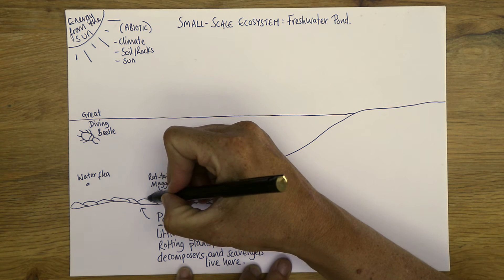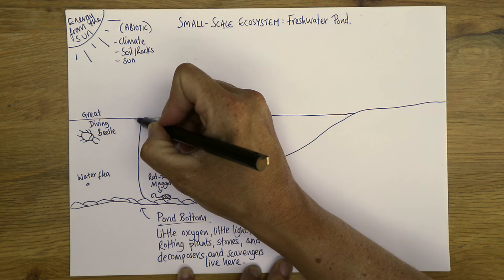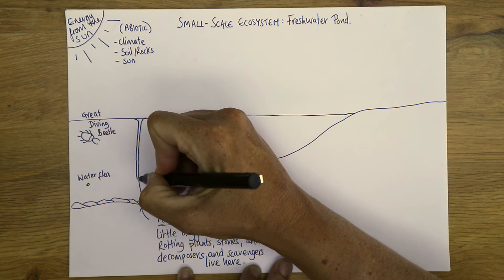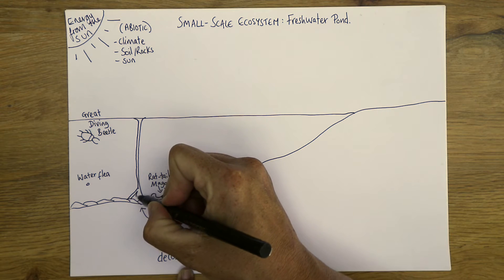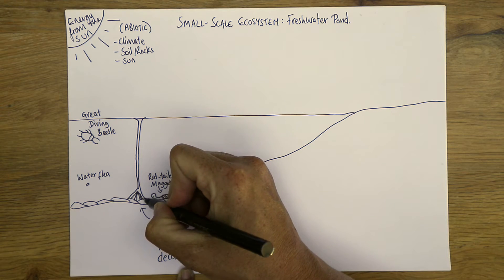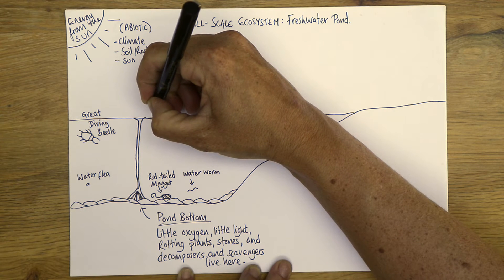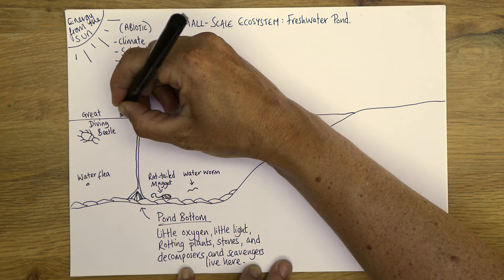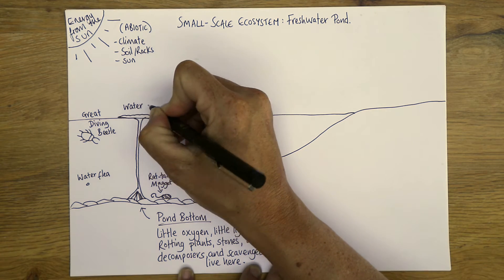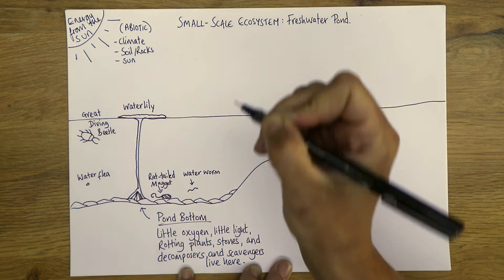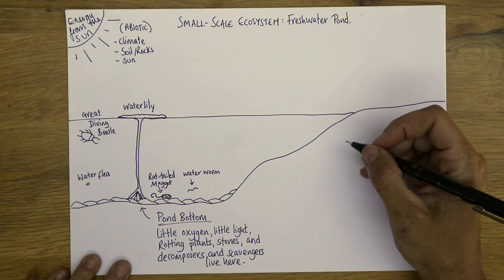The first plant we'll bring into play is a water lily — something really synonymous with ponds. It has a really long stem that branches out into the bottom of the pond with a number of roots, and on the surface it gets quite wide and can flower. It spreads wide to get as much sunlight as possible. That's our water lily.